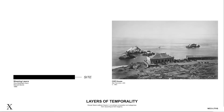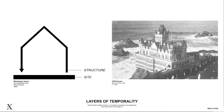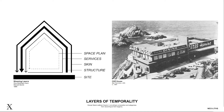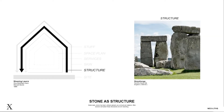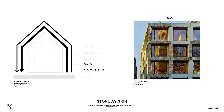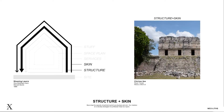As described by Stuart Brand's Shearing Layers, different material layers in a building correspond to different timescales. The site precedes the building and continues to exist even after the building is gone. The structure encompasses the entirety of the building's lifespan and acts as the framework for the rest of the layers. We are interested in exploring how stone, in different forms, can act as both the structure and skin of a building.